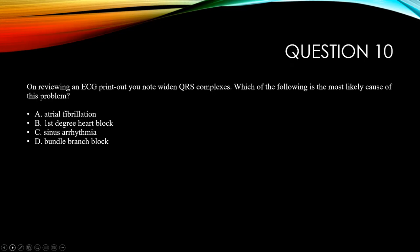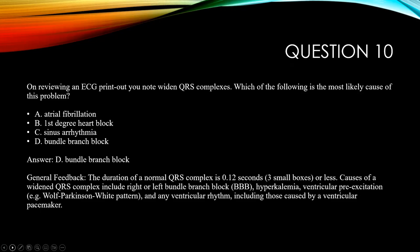Question ten: on reviewing an ECG printout you note a widened QRS complex. Which of the following is the most likely cause? Options include atrial fibrillation, first-degree heart block, sinus arrhythmia, and bundle branch block. The duration of a normal QRS is 0.12 seconds or less. Causes of a widened QRS include right or left bundle branch block, hyperkalemia (high serum K+), ventricular pre-excitation (Wolff-Parkinson-White pattern), and any ventricular rhythm including those caused by a ventricular pacemaker. The correct answer is bundle branch block.